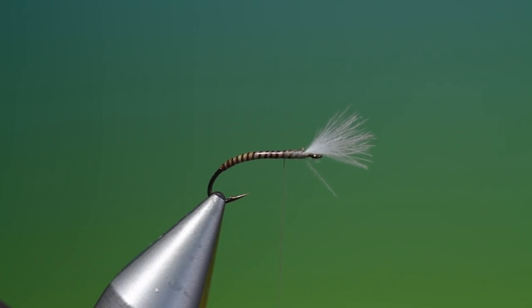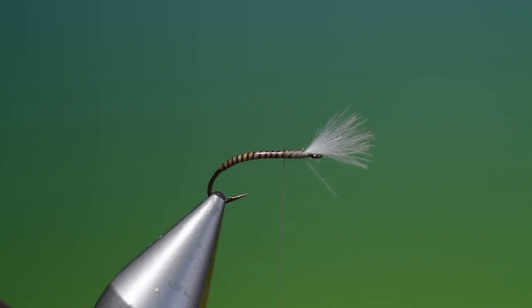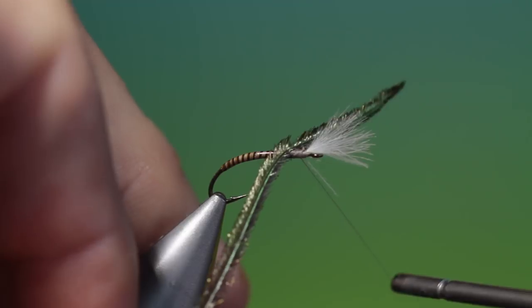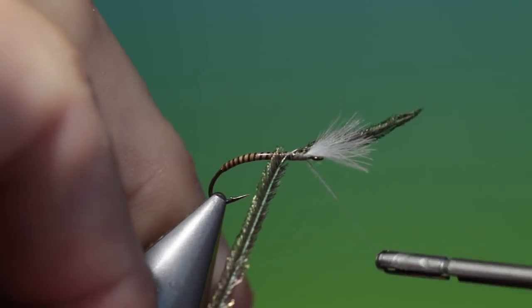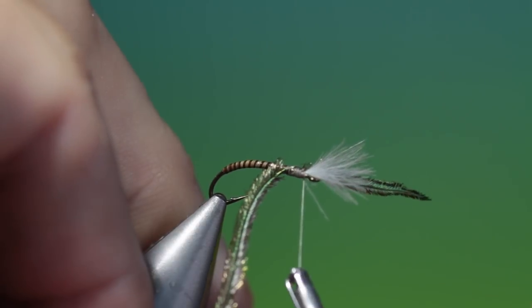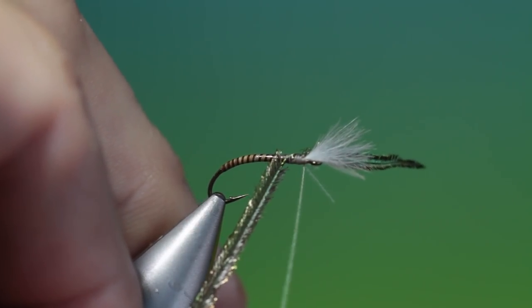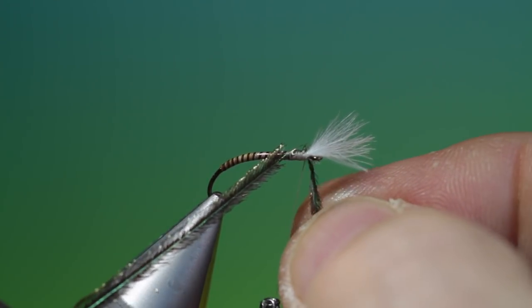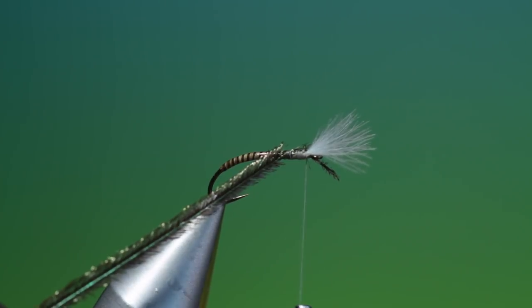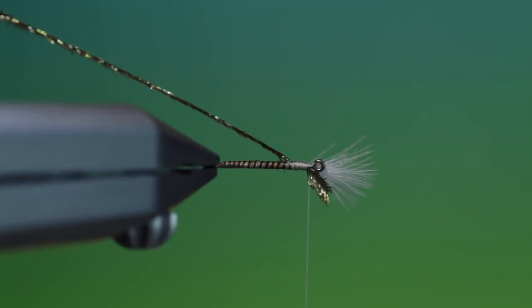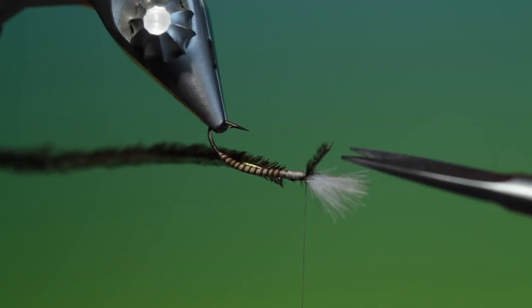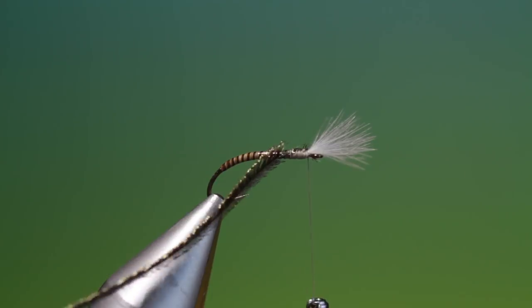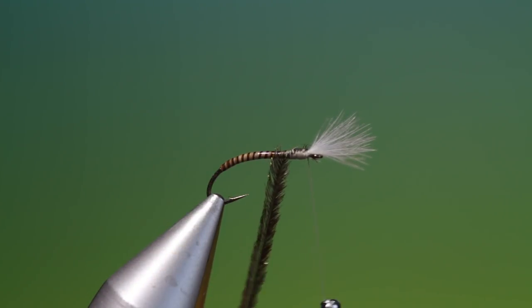And we just go back a wee ways. We take a peacock herl and we're going to tie that in. Never break where you want them to. Trim that off. Tie a hackle plier on the peacock herl.